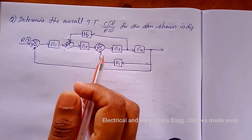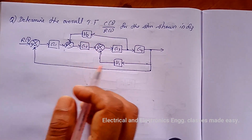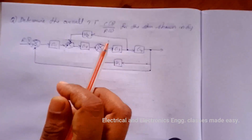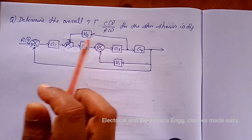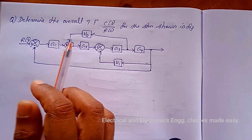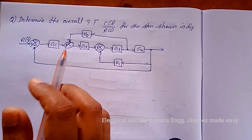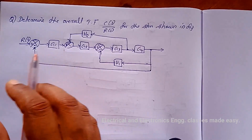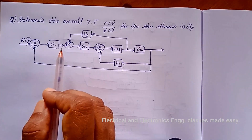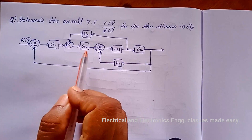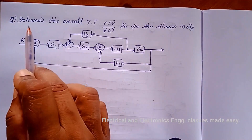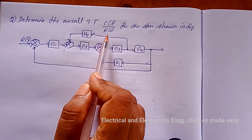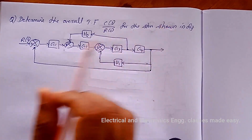Hello everyone, welcome to the new class. Today's class is the continuation of block diagram reduction — that is, problems related to block diagram reduction and finding the overall transfer functions. Let us go for an example: determine the overall transfer function C(s) divided by R(s) for the system shown in the figure.